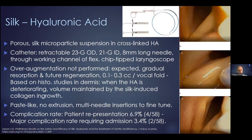A game-changer about injection laryngoplasty may be silk hyaluronic acid. This is a very new substance, and the first preliminary results have just been published. It has porous silk microparticle suspensions in cross-linked hyaluronic acid. It has its own catheter, used from the application channel of a flexible distal-chip endoscope. It does not need any over-injection, meaning that airway problems and dysphonia in the early days are much less common. It is a promising new substance, and I am expecting to use it in the upcoming days.